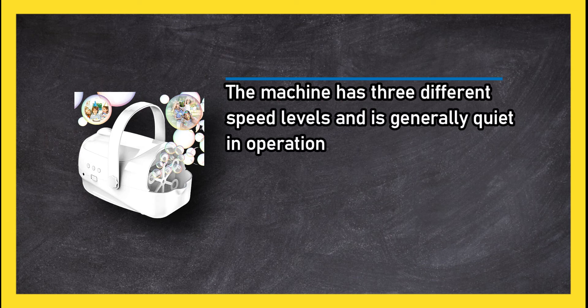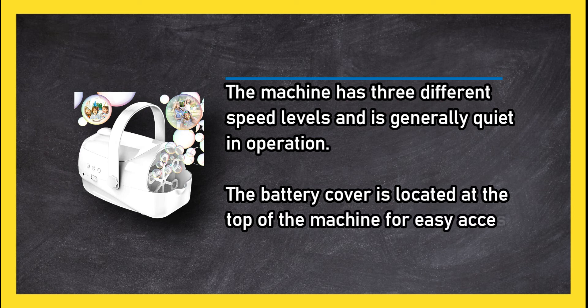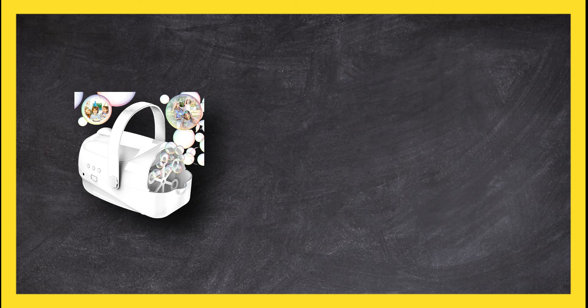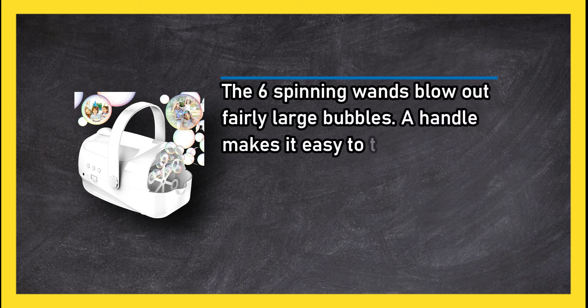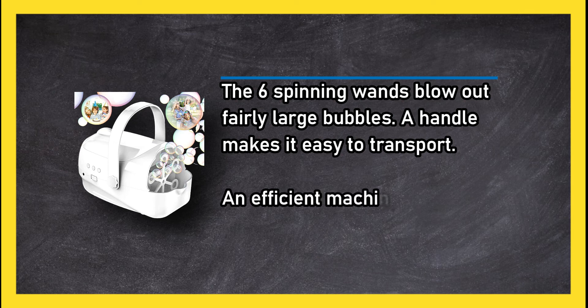The battery cover is located at the top of the machine for easy access. The six spinning wands blow out fairly large bubbles. A handle makes it easy to transport. An efficient machine with the capacity to produce 4,500 bubbles per minute.